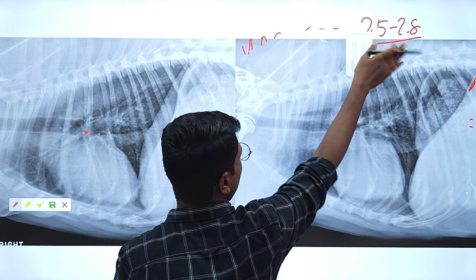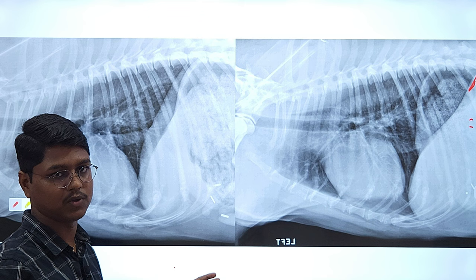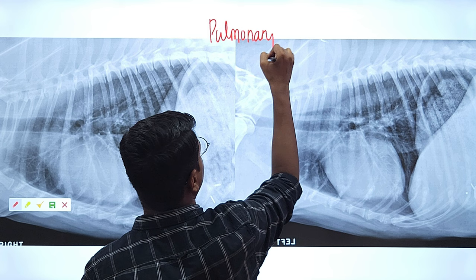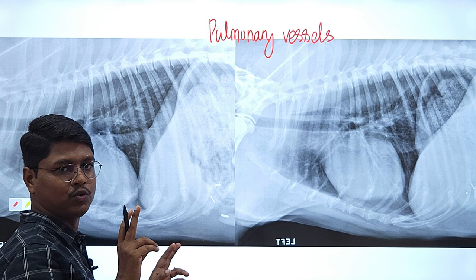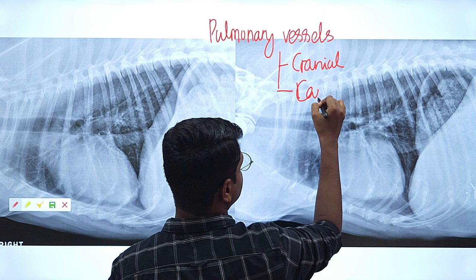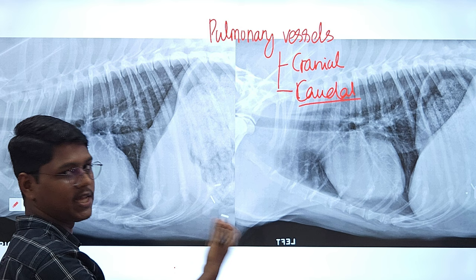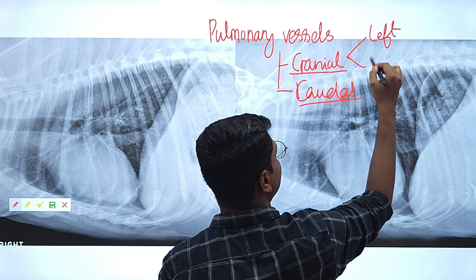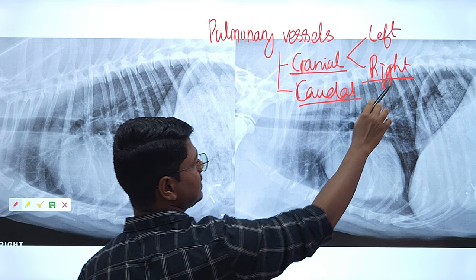Next, we will evaluate the pulmonary vessels. Pulmonary vessels are evaluated based on direction: the cranial vessels are evaluated in the lateral view and the caudal vessels are evaluated in the dorsal ventral view. We generally evaluate the right cranial pulmonary vessels because they traverse ventrally and are easy to identify against the lung background.